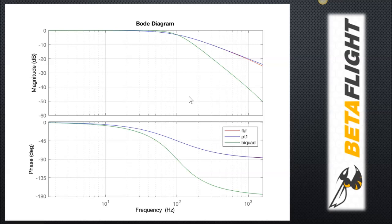Ultimately, if you plot the FKF and PT-1 filters mathematically using MATLAB or Octave, the math shows that the attenuation and the phase delay lines — red line and blue line — lie right on top of each other. That is why Betaflight decided to repurpose existing code within Betaflight to simulate the FKF, because it was already there and producing the same results.